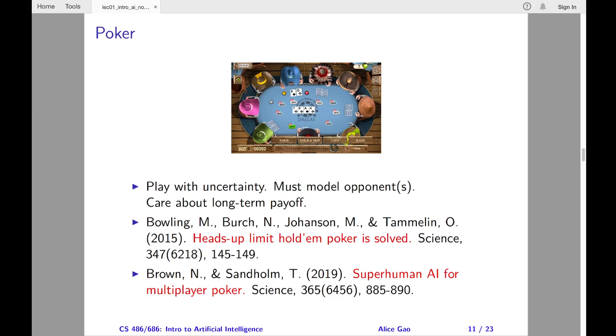They modeled poker as an extensive form game, and solved for an approximation of the Nash equilibrium using an algorithm called counterfactual regret minimization. They declared that the game is essentially weakly solved, which means that a human lifetime of play is not sufficient to establish with statistical significance that the strategy is not an exact solution. The results confirmed that the game is a winning game for the dealer.